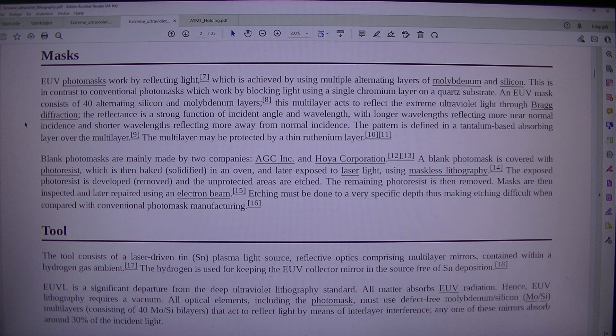The multilayer may be protected by a thin ruthenium layer. Blank photomasks are mainly made by two companies, AGC Incorporated and Hoya Corporation. A blank photomask is covered with photoresist which is then baked in an oven and later exposed to laser light using maskless lithography. The exposed photoresist is developed and the unprotected areas are etched. The remaining photoresist is then removed. Masks are inspected and later repaired using an electron beam.